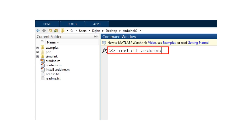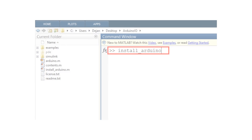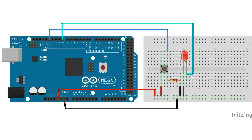Once we have done this and uploaded one of the sketches to the Arduino board, we are ready to make the first example. We will make a very simple example using a button and a LED, where the LED turns on when the button is pressed. We will connect the button to pin number 12 and the LED to pin number 8.